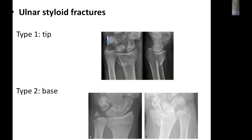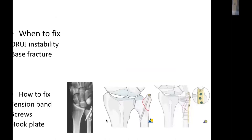Regarding ulnar styloid fracture, fixation is indicated only if there is a large basal fragment and instability remains after distal radius fixation. Fixation options include tension band, screws, or a hook plate.